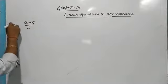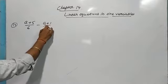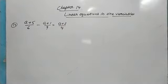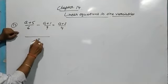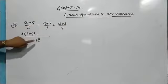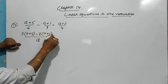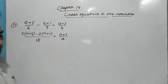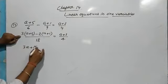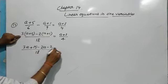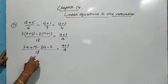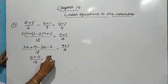Question 14 from the book: (a + 5)/6 − (a + 1)/9 = (a + 3)/4. Taking LCM of 6 and 9 which is 18: [3(a + 5) − 2(a + 1)] / 18 = (a + 3)/4. Expanding: (3a + 15 − 2a − 2)/18 = (a + 3)/4, which simplifies to (a + 13)/18 = (a + 3)/4.